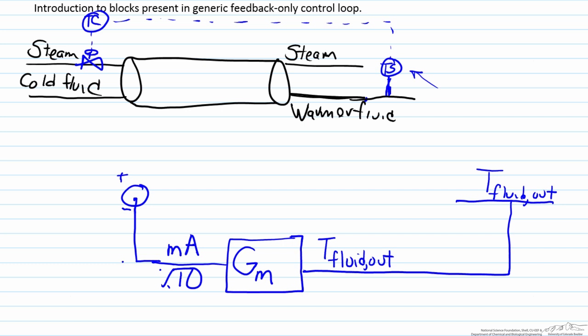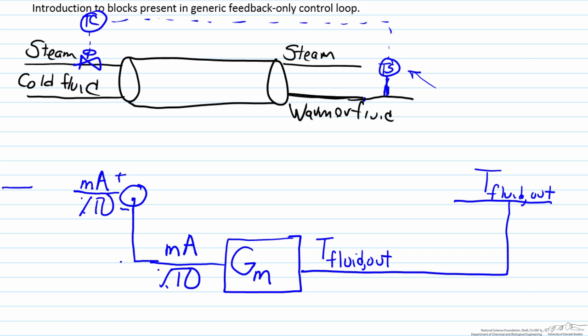But an important point here is our subtraction has to be like versus like. So therefore what has to come in here is a signal, either in milliamps or percent transmitter output. However what comes in here is the actual steady state temperature.